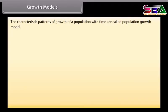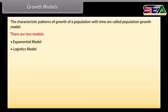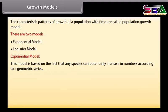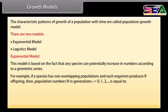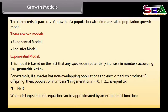The characteristic patterns of growth of a population with time are called population growth models. There are two models: the Exponential Model and the Logistic Model. The exponential model is based on the fact that any species can potentially increase in numbers according to a geometric series. If a species has non-overlapping populations and each organism produces R offspring, then population numbers N at generation T is: N(T) = N₀ × R^T. When T is large, this can be approximated by the exponential function N(T) = N₀ × e^(RT).